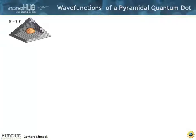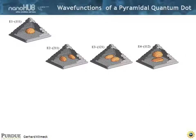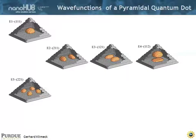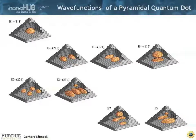Here are some sample wave functions of a pyramidal dot: the s orbital, then a class of p orbitals, though you can see that the symmetry can be broken. The next set of orbitals looks different, and then they get really bizarre looking with overlapping wave functions. You can obtain all of that numerically in NEMO3D.